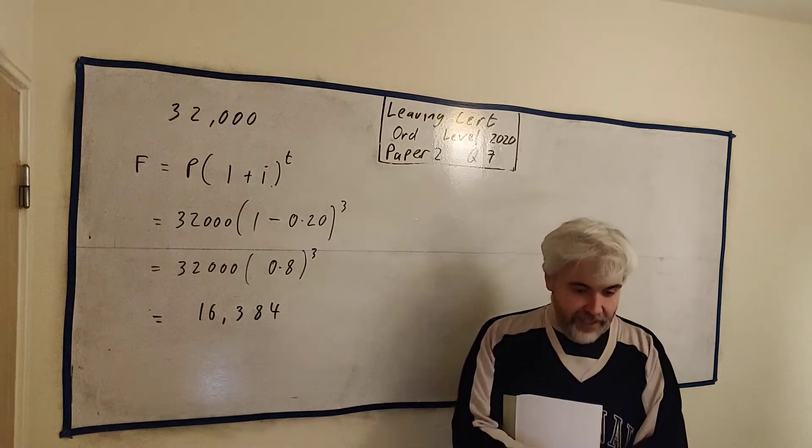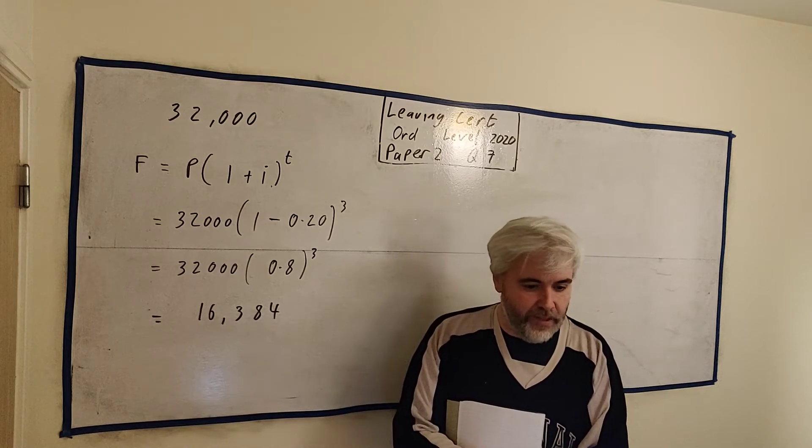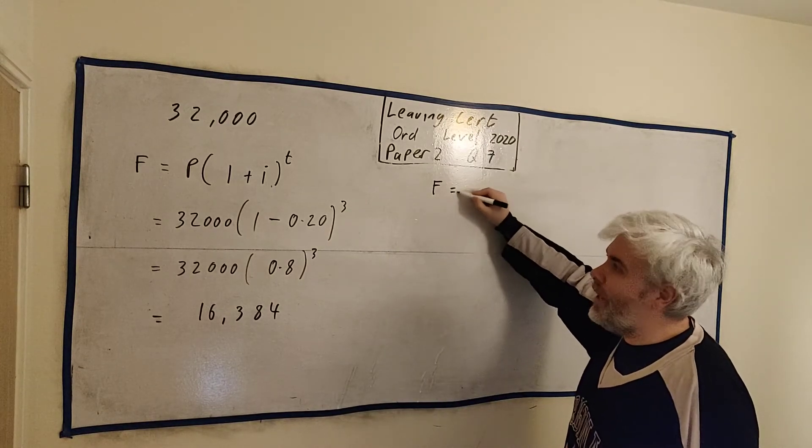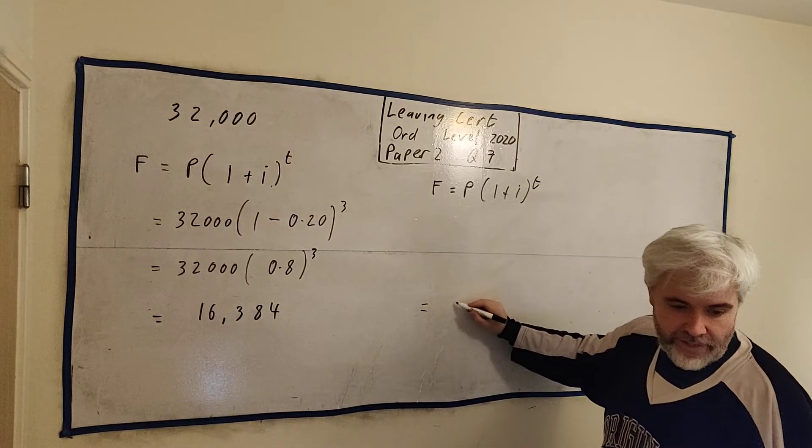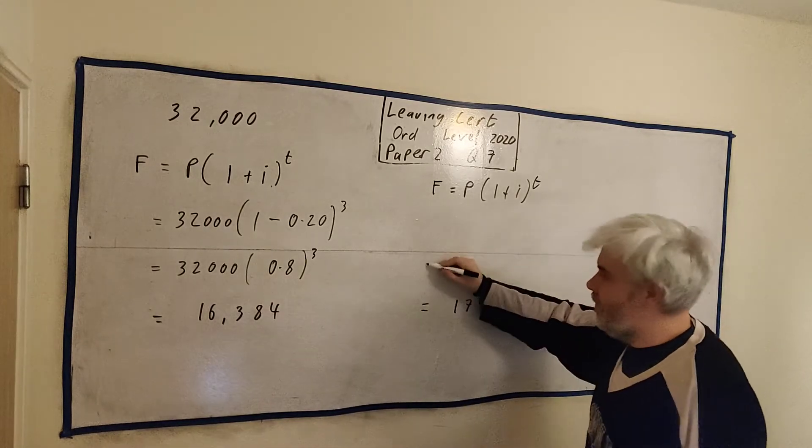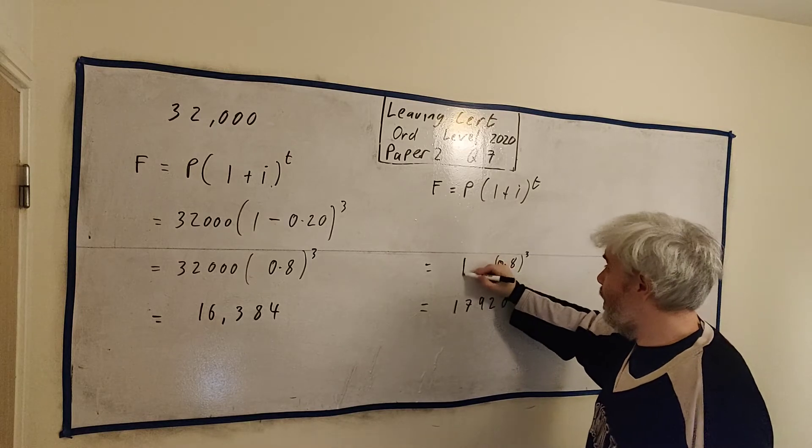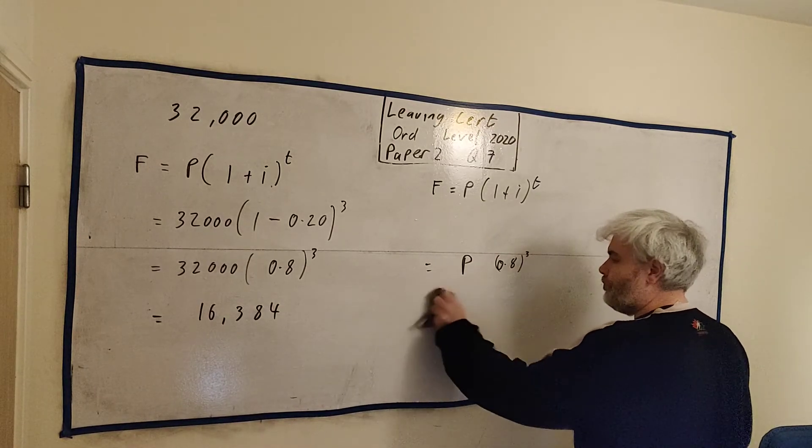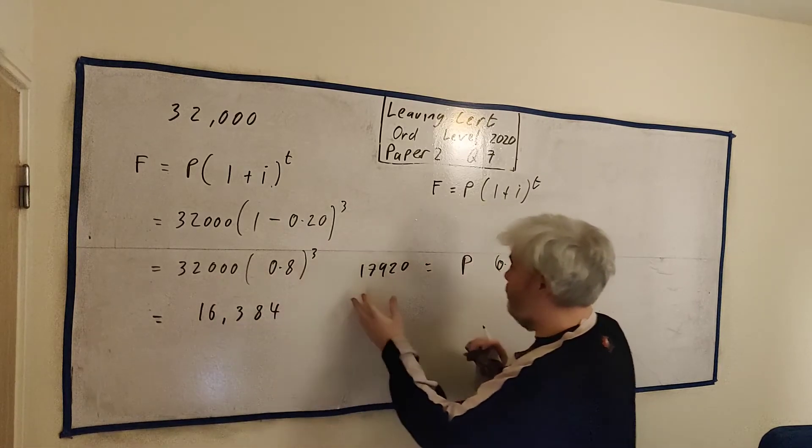The final number is what we're looking for. The initial number is 32,000. The interest rate, how much it goes up every year, well that's minus 20%. So it doesn't go up, it goes down. So we can use a minus here. And they want us to do it for three years. We can do a lot of this here by hand without a calculator. 1 minus 0.2 is 0.8, that's to the power of 3. We'll use a calculator to do this. This will come out as, if we put this in a calculator, it'll come out as 16,384 euro. That's how much the car has worked after three years. Pat's friend, Kathleen I think, bought a new car three years ago. Its value has depreciated 20% per year. It is now worth $17,920. Find the original price of the car. They want us to do the same question again, except backwards.